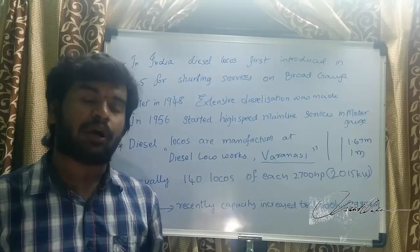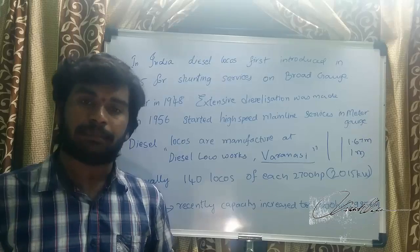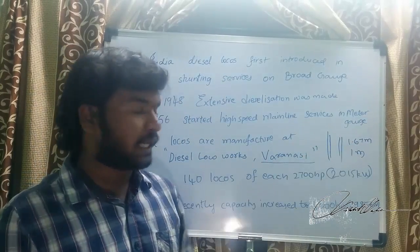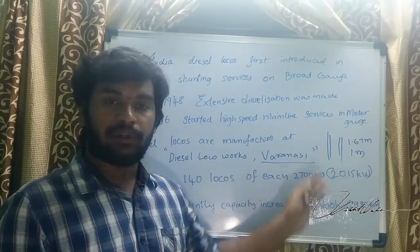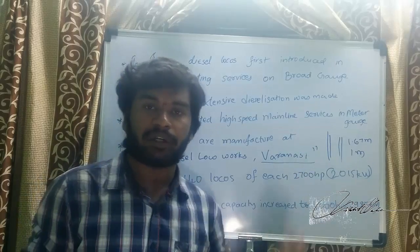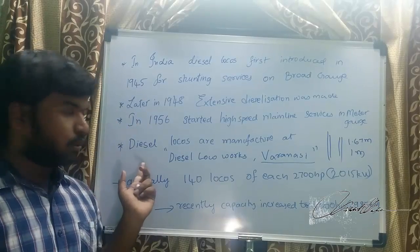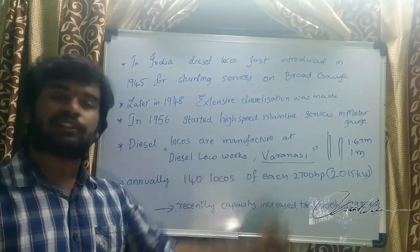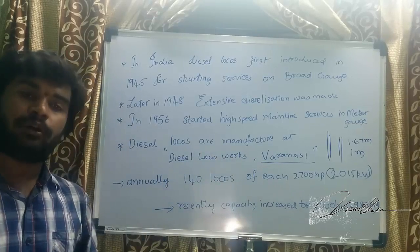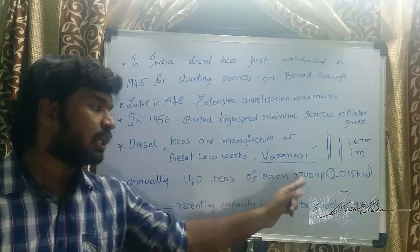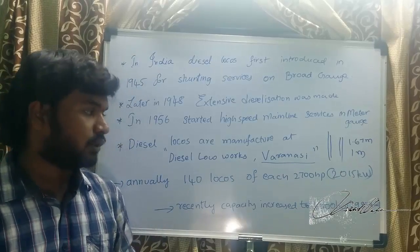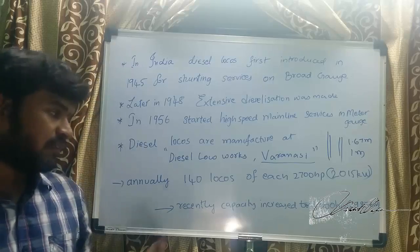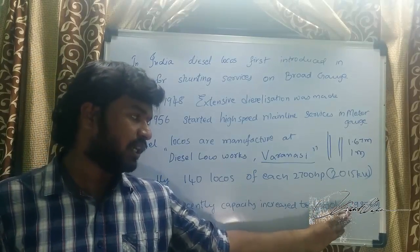Meter gauge means one meter between tracks, as the name indicates. Mainline or passenger services run on meter gauge. Diesel locos in India are manufactured at Diesel Loco Works in Varanasi — please remember this important point. This facility manufactures 140 locos of 2700 hp each, equal to 2115 kilowatts. Recently, they raised capacity and are now manufacturing 4000 hp locos, rated at 2985 kilowatts.